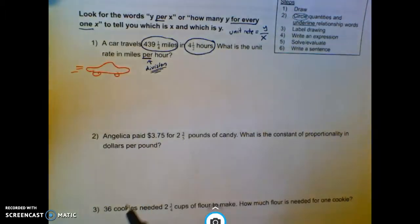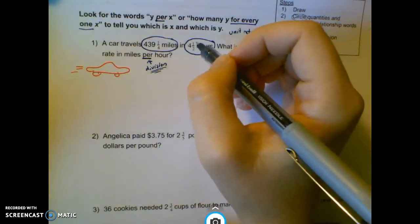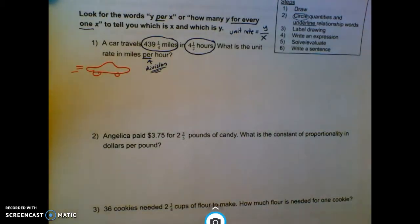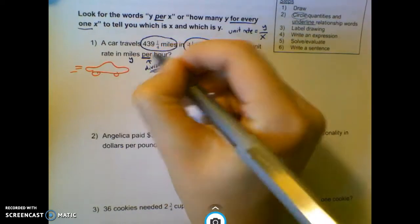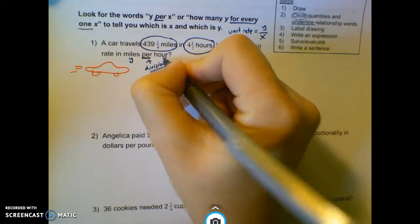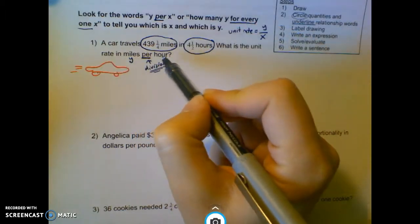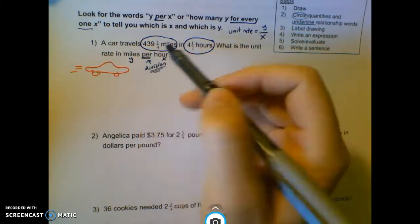And when I go to label my drawing, I'm going to use a particular language structure that tells me that this is going to be Y and this is going to be X. This is always the case. Y per X. Anytime we see this word per.